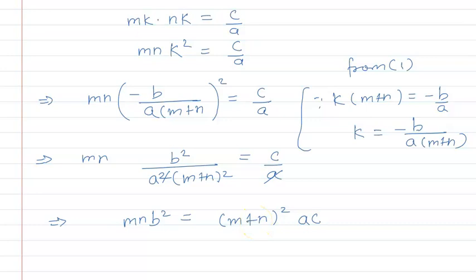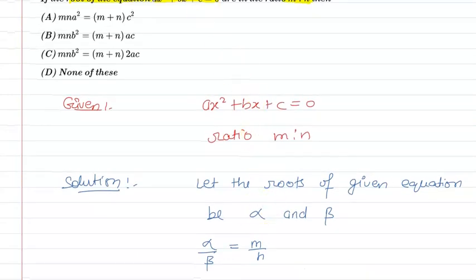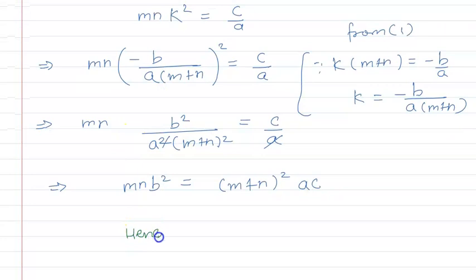Now let us check the options, which option will be the correct option that matches our answer. From options a, b, c, d, the option which is b is the correct option that matches our answer. Hence we can say that option b is correct. So I hope you have understood the question. Thank you.